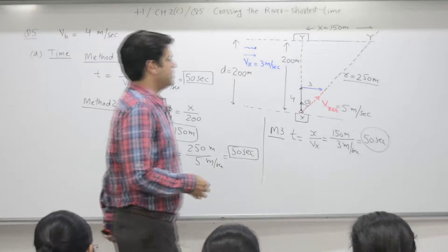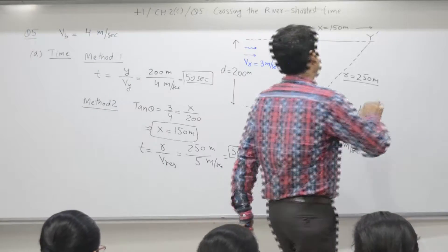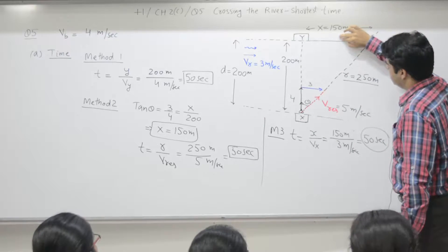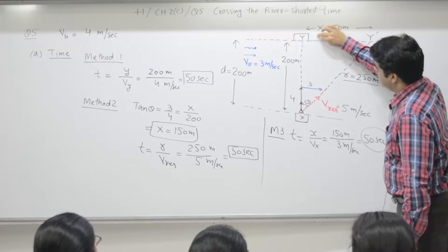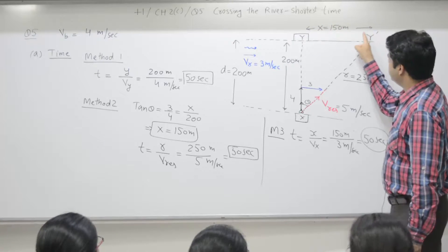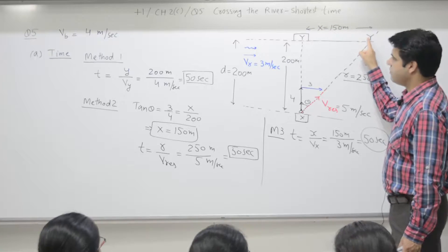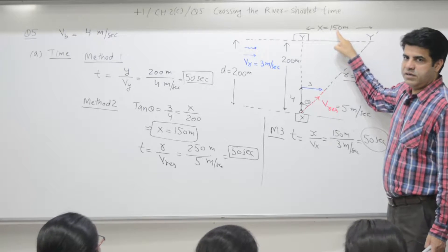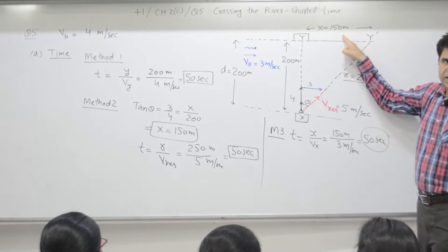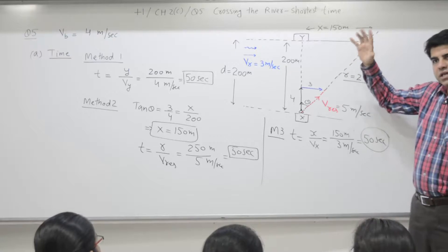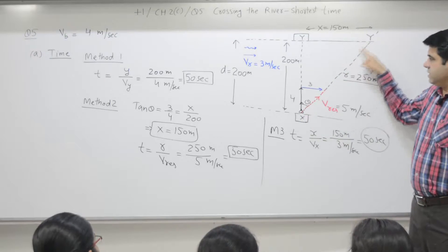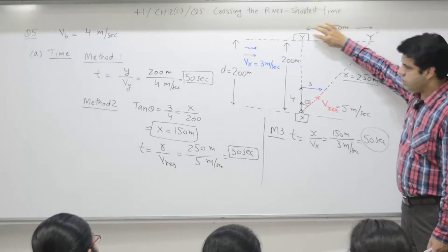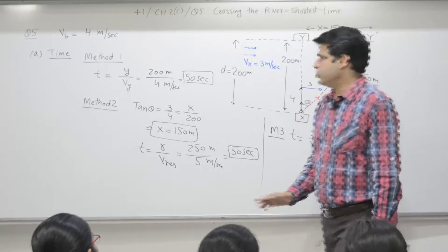There is a supplementary question attached to the same: if the person moves at 6 meters per second, how much time will it take to travel from Y-dash to Y? That is 150 divided by 6 = 25 seconds. So the overall journey: water journey is 50 seconds, and along the river journey is 25 seconds.